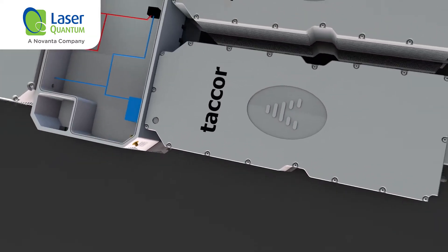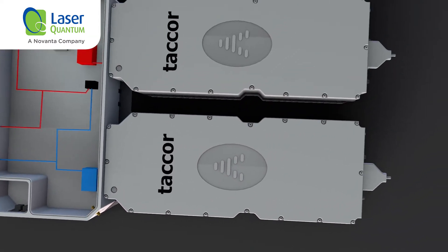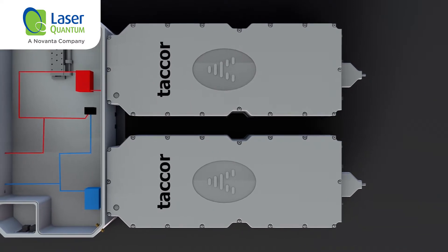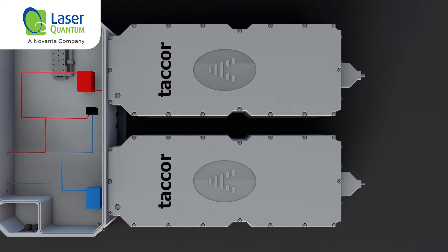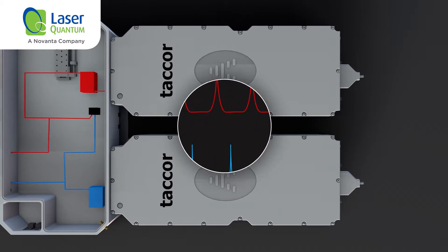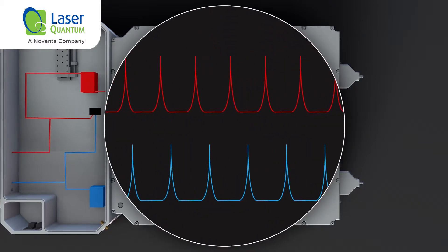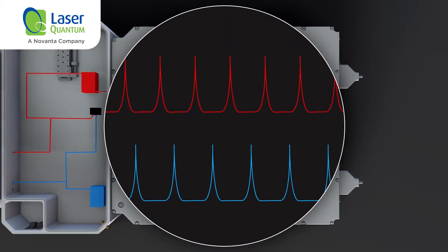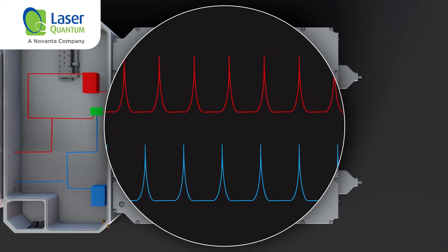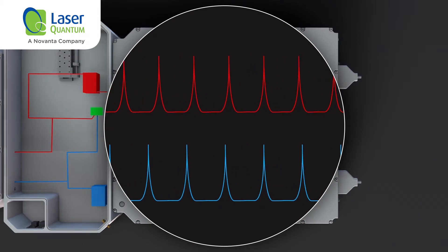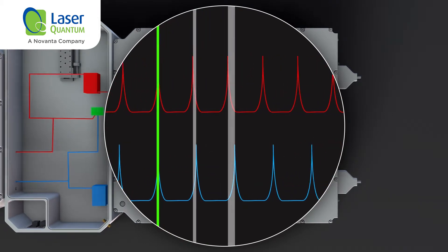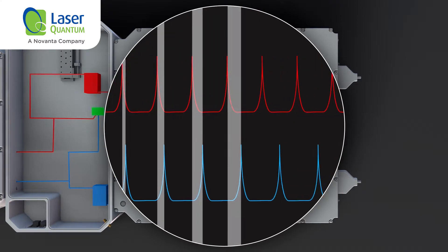Using the TL-1000 ASOPS repetition rate offset stabilization unit permits time-domain spectroscopy with unprecedented accuracy and resolution. The optical triggering unit generates the measurement start, where the pump and probe pulses are synchronized.